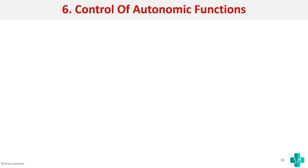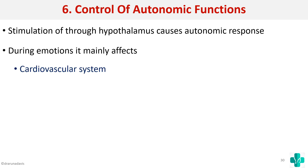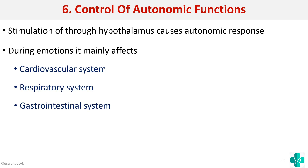The final function is control of autonomic functions. Since the hypothalamus is part of the limbic system and is the head ganglion of the autonomic system, the limbic system is naturally involved in autonomic control. Stimulation of the limbic system through the hypothalamus can cause autonomic responses. During emotions, the person will have cardiovascular, respiratory, and gastrointestinal effects — all because of the hypothalamus's important role in the autonomic system.